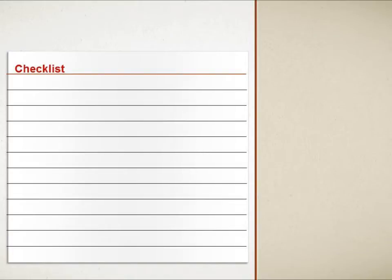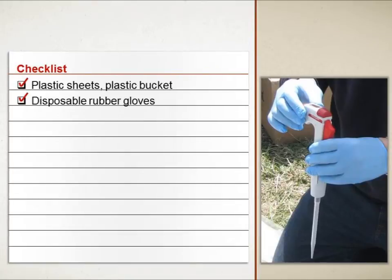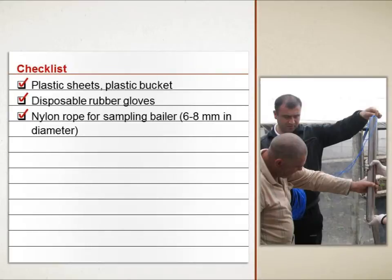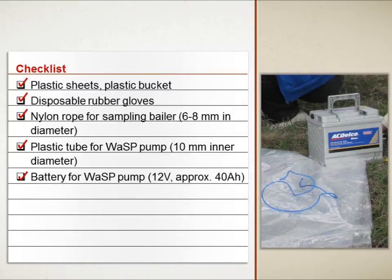The following materials should be prepared prior to doing any sampling work: plastic sheets for protecting field equipment from contamination, a plastic bucket for measuring well yields, the volume of purged groundwater, and field parameters. Disposable rubber gloves for sampling. Nylon rope or cable to use with the sampling baler. A plastic tube for the wasp pump to raise groundwater from the well. A battery for the wasp pump.